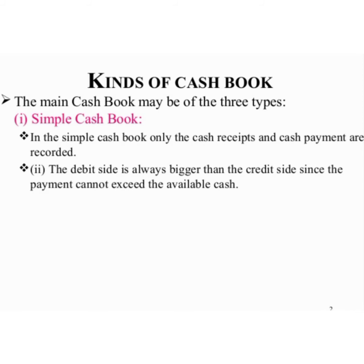The single column cash book records all the cash transactions of the business in chronological order. It is a complete record of cash receipts and cash payments when all receipts and payments are made in cash. The cash book contains only one amount column on each side. Single column cash book records only cash transactions — it does not keep any record about banking transactions and cash discount. It is also known as simple cash book.